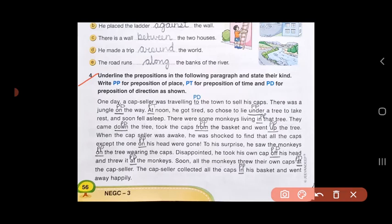One day, a cap seller was traveling to the town to sell his caps. 'To' is preposition of direction because he was traveling towards the town. There was a jungle on the way. 'On' again is telling you the direction of the jungle, so on will be labeled as PD. Next sentence. At noon, he got tired. 'At' is telling you the time, so preposition of time. So he chose to lie under a tree to take rest.